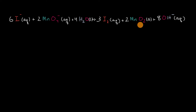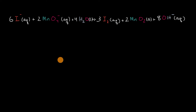What we have here is a reaction that involves iodine, manganese, oxygen, and hydrogen. What we want to do in this video is think about which of the elements are being oxidized in this reaction and which of the elements are being reduced in this reaction.